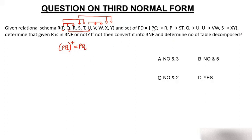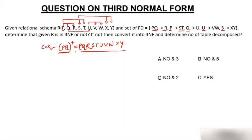Let's find the closure of PQ. Start with PQ. Using PQ I can write R. Using P I can write S and T. Using Q I can write U. Using U I can write V and W. Using S I can write X and Y. Finally, with the help of PQ I am determining all the attributes of the table. So PQ is the candidate key, and only PQ will be the candidate key — adding any attribute to PQ would make it a super key, not a candidate key.